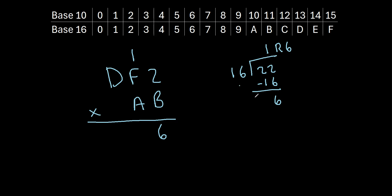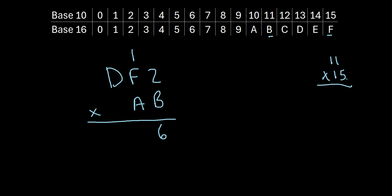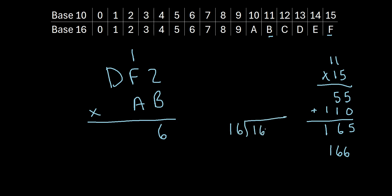Next, what is B times F? Remember, B is 11 and F is 15, so we're really saying 11 times 15, plus 1 carried over. 11 times 15 is 165, and adding 1 gives us 166. This value is greater than 16, so we ask how many 16s go into 166. 16 times 10 is 160, so the answer is 10 with a remainder of 6. The remainder 6 is written under the line, and we carry 10 to the next column.